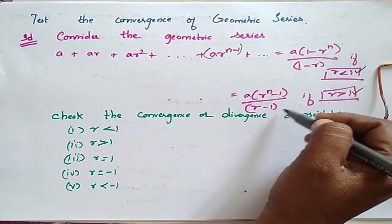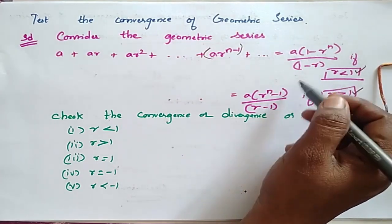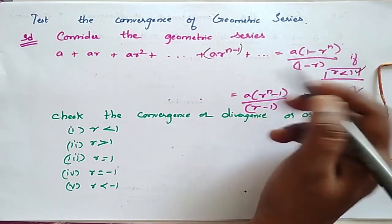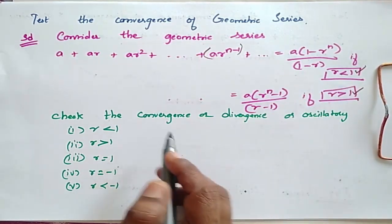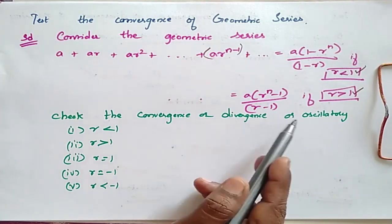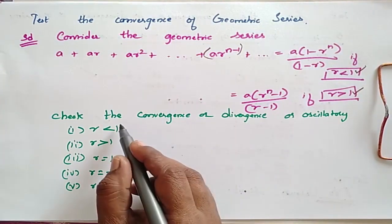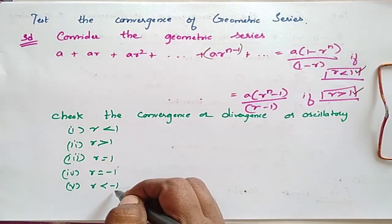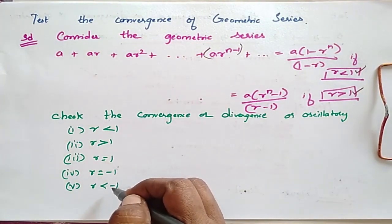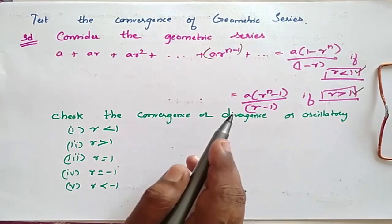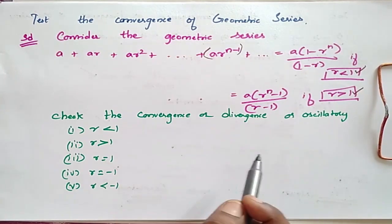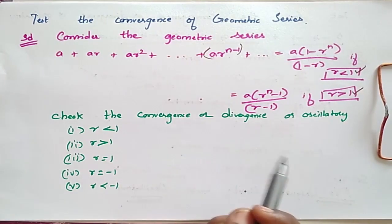Since we come across these possibilities, we have to check convergence, divergence, or oscillatory behavior for all five cases, so that we can consolidate when the series converges, diverges, or is oscillatory.